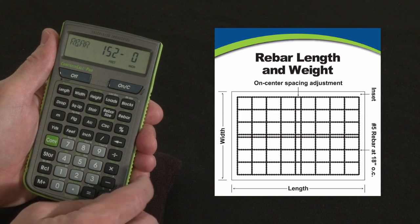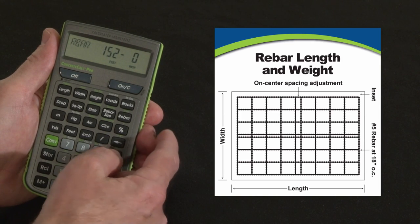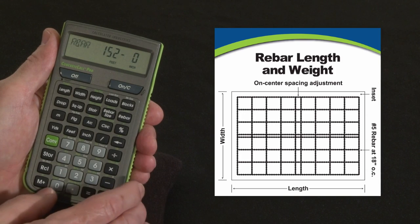Now keep in mind this is total lineal length and that's butt to butt. That does not include any overlapping of rebar, so if you plan to overlap you do need to add in a factor for that.